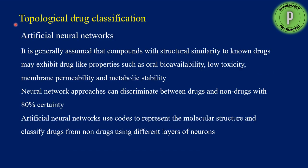The next method is topological drug classification, which uses artificial neural networks. It is based on the assumption that compounds with structural similarity to known drugs exhibit drug-like properties such as oral availability, low toxicity, membrane permeability, and metabolic stability. Neural network approaches can discriminate between drugs and non-drugs with 80% certainty. These artificial neural networks use different codes to represent molecular structure and classify drugs from non-drugs using different layers of neurons.